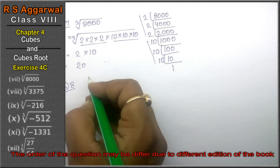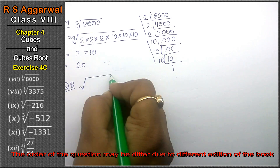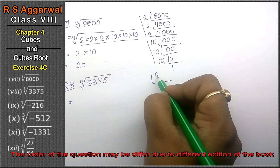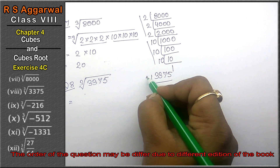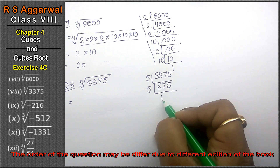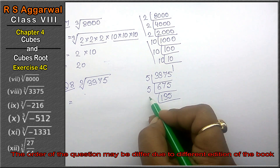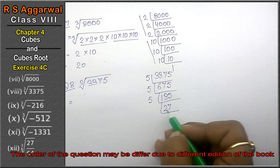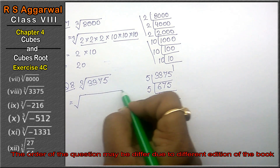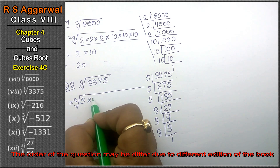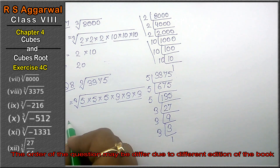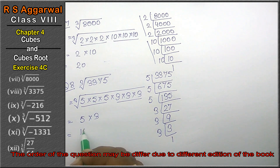Let's do question number 8 of Exercise 4C. Question number 8 is cube root of 3375. We do the prime factorization of 3375. Dividing by 5: 3375→675→135→27. Then 27 = 3×3×3. So 3375 = 5×5×5×3×3×3. Writing in the cube root, we have 3 fives and 3 threes, making pairs. One 5 and one 3 come out. So 5×3 = 15 is the answer.